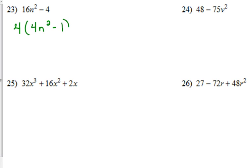We're left with 4n squared minus 1. 4n squared minus 1 is still a perfect square. So the final answer, the fully factored answer here, would be 4 times 2n plus 1 times 2n minus 1.